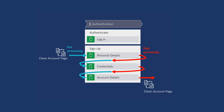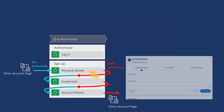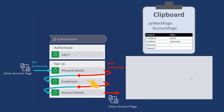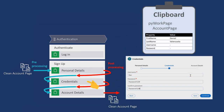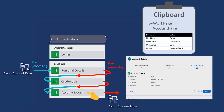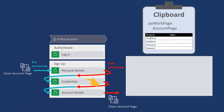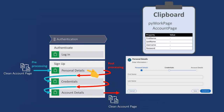Now we are facing an issue. This flow action is of category ScreenFlow, which means that the user is able to go backwards. This means that if the user goes back to the first step — say, to fix a typo — its pre-processing will be triggered, cleaning the whole account page and erasing all the progress that the user has made.